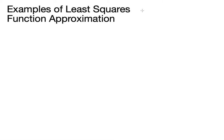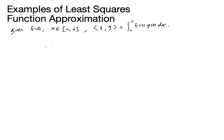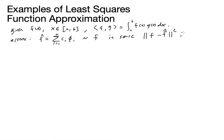Let me write down that formula. We're going to be given an f of x on some domain, an interval a to b. We have an inner product on that interval defined by the integral of f(x) times g(x) dx. Then we have an approximation: f-hat is equal to the sum c_i φ_i, for i equals one to n, and it will be as close as we can get to f.